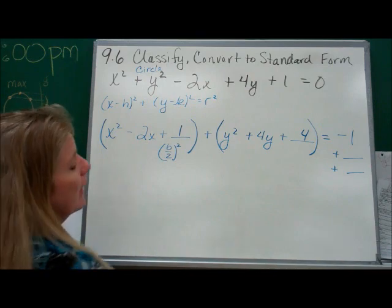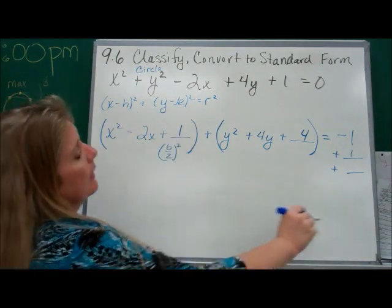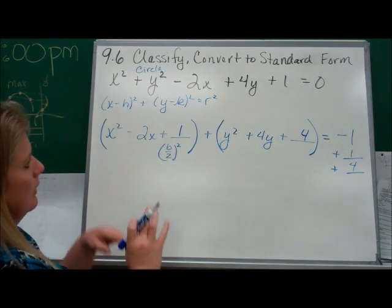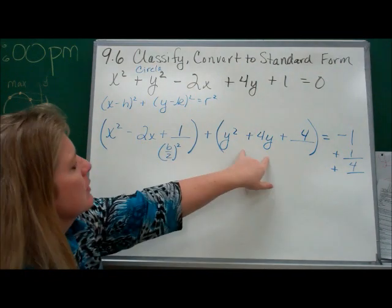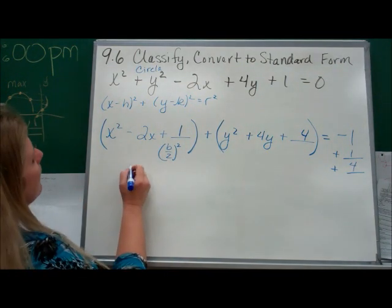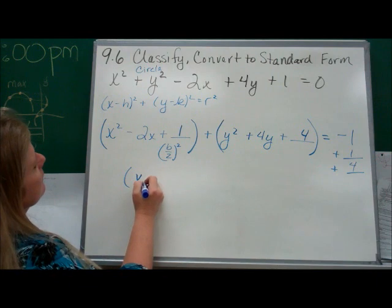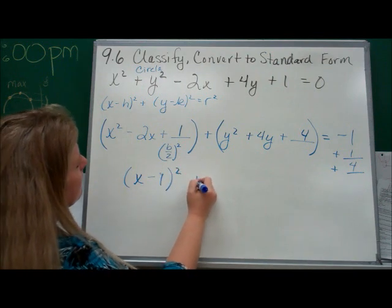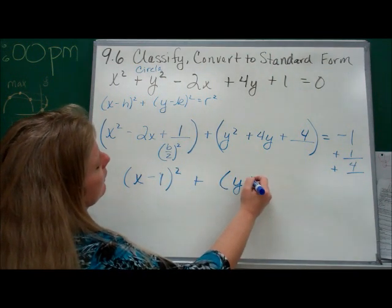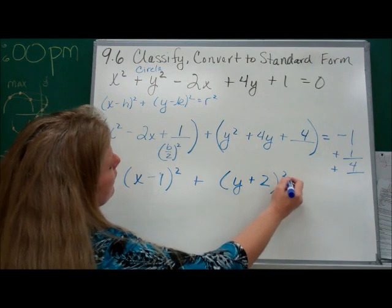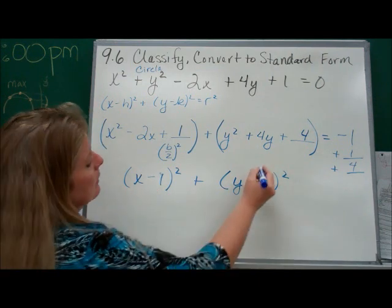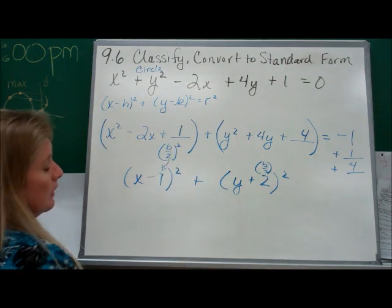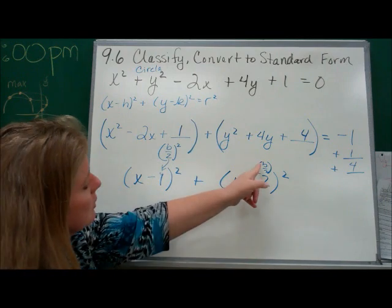So on this side, I'm adding 1, because I added a 1 here. And I'm adding 4, because I added a 4 there. Now, we've made perfect square trinomials, so we factor them. It's going to be x minus 1 squared plus y plus 2 squared. And you know what this 1 and this 2 is? It's b over 2. The negative 1 is b over 2. The 2 is b over 2.